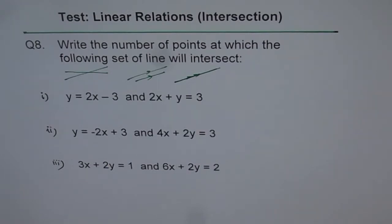The first part is y equals 2x minus 3 and 2x plus y equals 3. Second is y equals minus 2x plus 3 and 4x plus 2y equals 3. And the third part is 3x plus 2y equals 1 and 6x plus 2y equals 2.